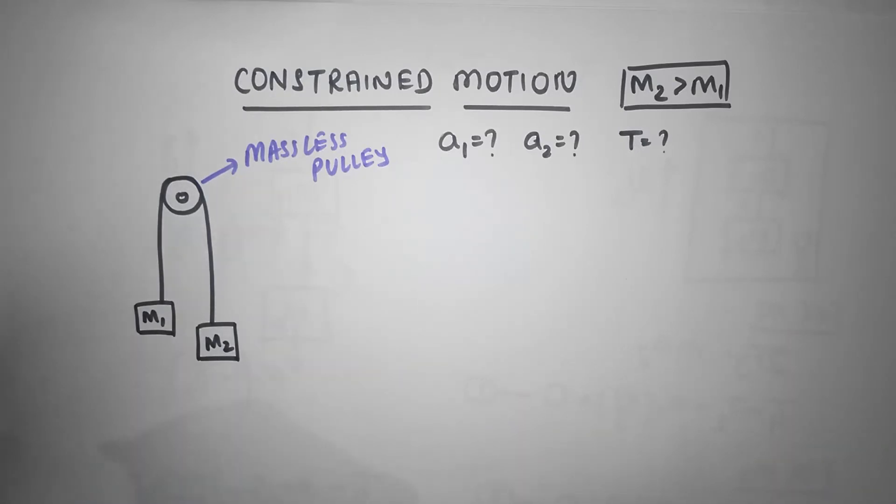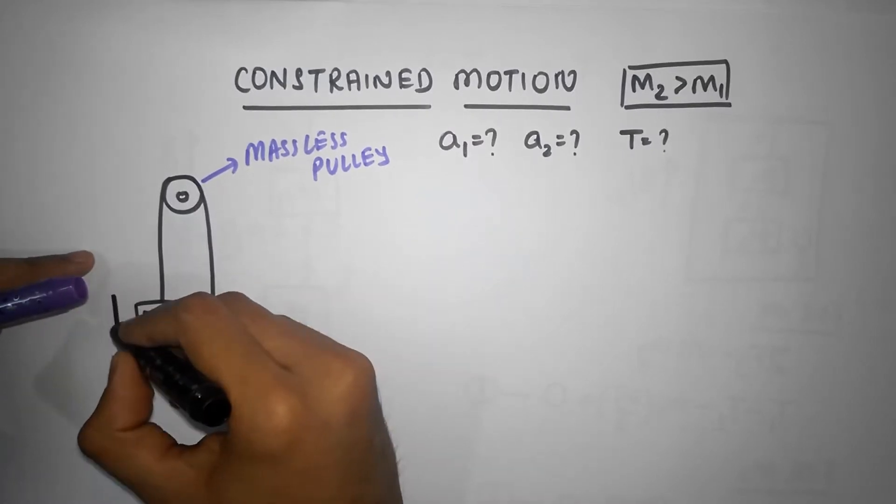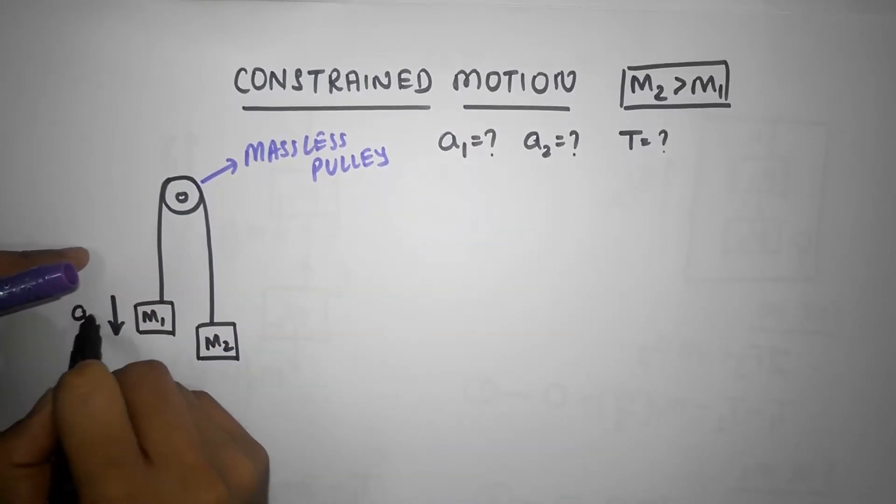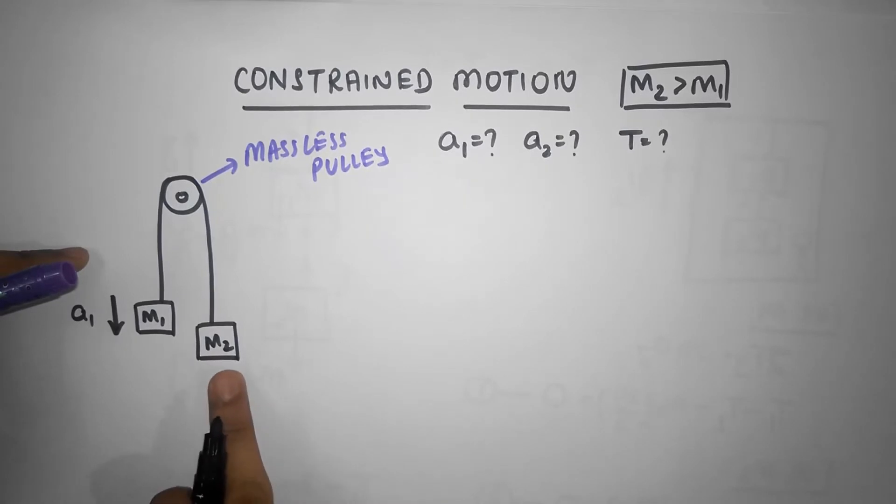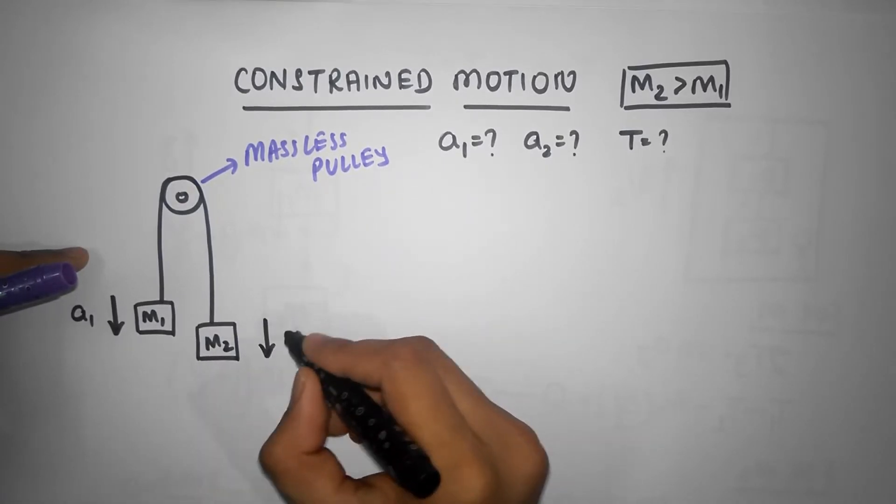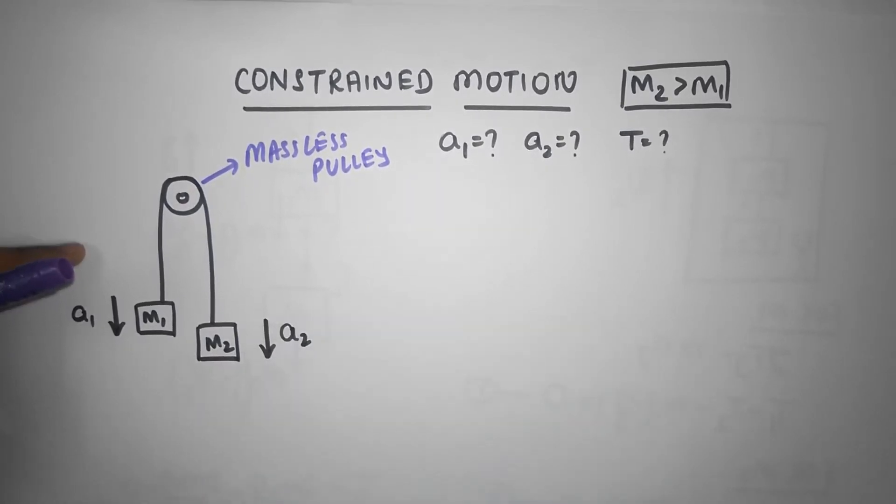So what I'm going to do is I'm going to assume this mass is going to get an acceleration downwards, and I'm going to call the acceleration as a1. And I'm going to assume that this mass is also going to get an acceleration downwards and let me call it as a2.